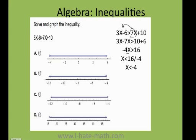Do not forget, here I need to divide by negative 4 because I need x by itself. But any time you divide by a negative number, the sign of the inequality has to be flipped. That's the reason why we flip the sign here, and it tells me that x is less than negative 4.